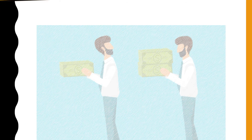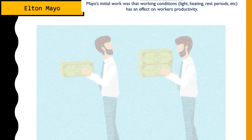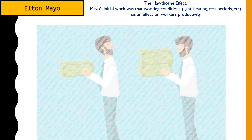Now let's look at our second researcher, Elton Mayo, who came about with the discovery of the Hawthorne effect. His research looked at a plant in Hawthorne, where his initial aim was to discover why there was very high labor turnover. His assumption was that working conditions — such as lighting, heating, and rest periods — could be the reason workers were less productive and unhappy. However, upon rolling out his research, what he discovered was not what he had initially expected.